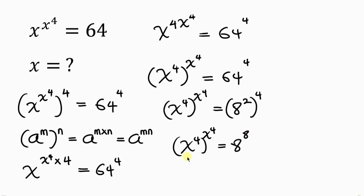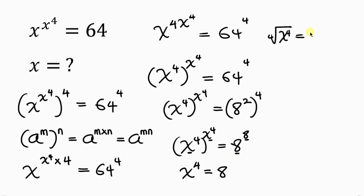Notice by comparison that the base and exponent on the left are the same, and the same is true on the right — both equal 8. This means X to the power of 4 must equal 8. To find X, I take the fourth root of both sides, so X equals plus or minus the fourth root of 8.